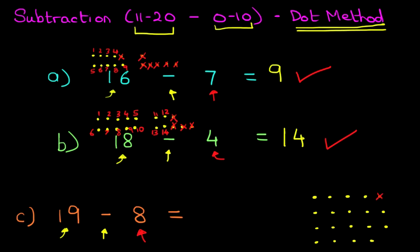So let's do that. We've got 1, 2, 3, 4, 5, 6, 7, 8. So we have crossed out 8 of the dots.